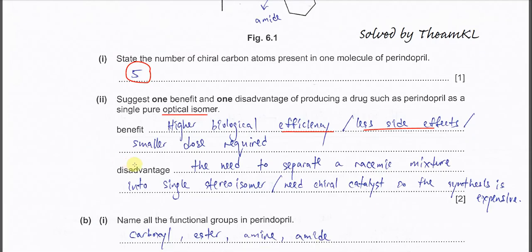The disadvantage is the need to separate the racemic mixture — meaning to separate the positive and negative enantiomers. This process is time-consuming and costly. Also, if we use a chiral catalyst, it is expensive and very costly.